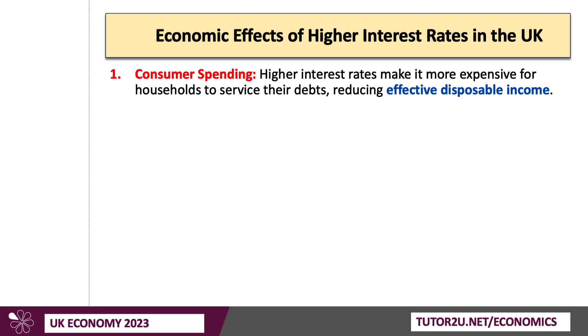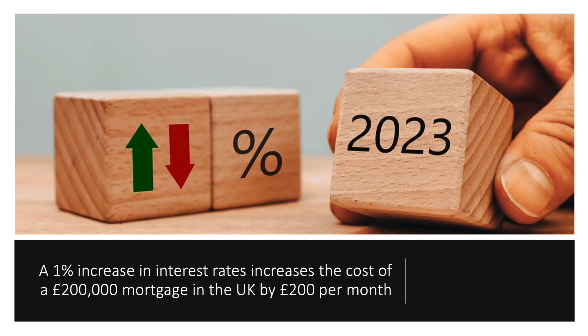First, we'd expect higher interest rates to affect consumer spending. Higher interest rates make it more expensive for people to service their debts — typically the interest rate on a credit card or the interest paid on a mortgage. If debt interest goes up, that reduces their effective disposable income, the amount of money they have left to spend on goods and services. A 1% increase in mortgage interest rates increases the cost of a £200,000 mortgage by £200 per month, so this can significantly affect the spending power of people who have borrowed heavily to buy a property.